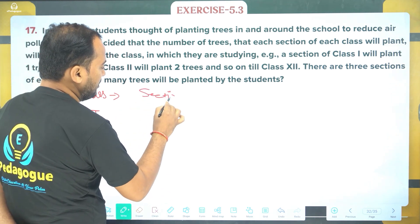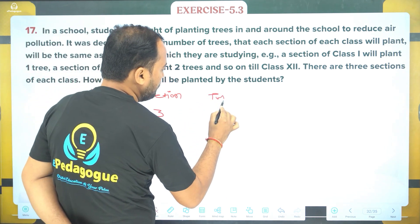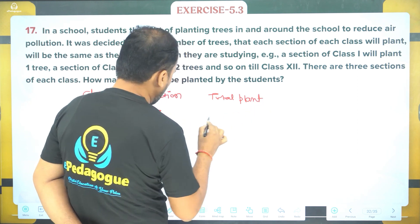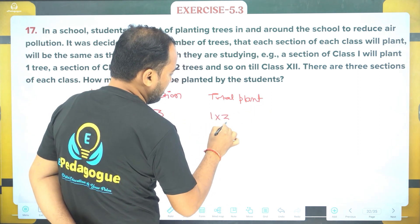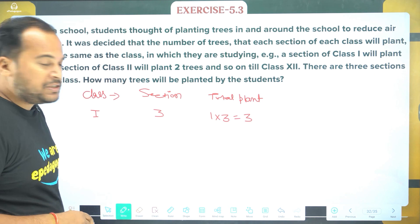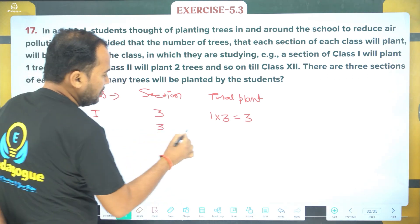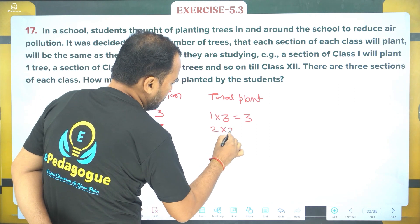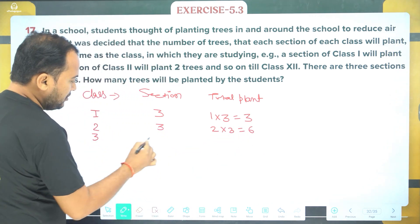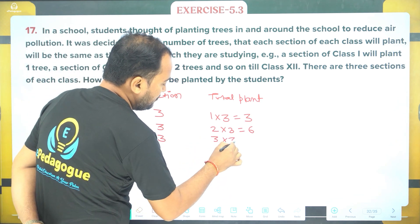There are 3 sections per class. So for class 1, total plants = 1 into 3, which is 3. For class 2, plants = 2 into 3, which is 6. For class 3, it is 3 into 3, which is 9.